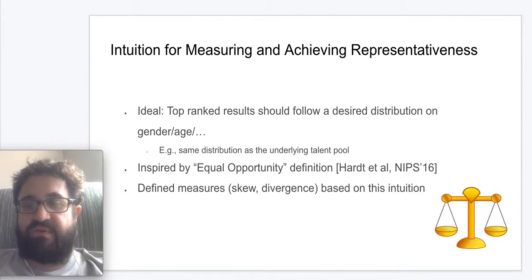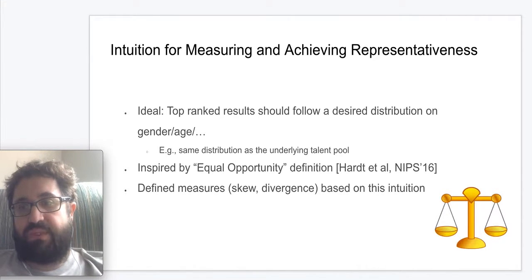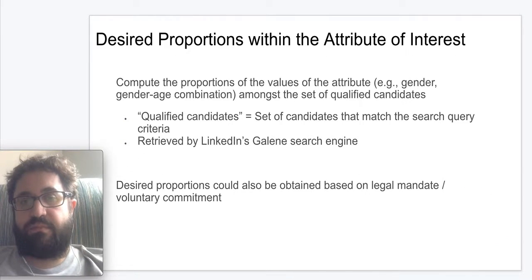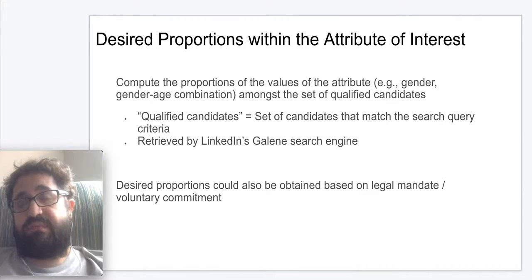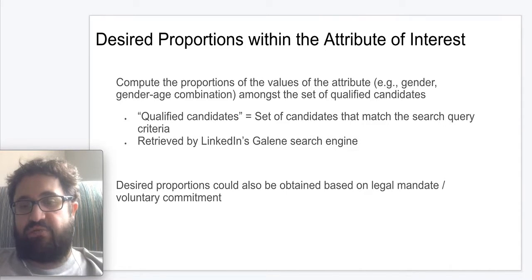We define the qualified population to be the set of candidates that match the criteria set forth in the recruiter's query. For example, if the query is for people who can code in Java and are in the San Francisco Bay Area, then the qualified population is all members in that area who can code in Java. We utilize LinkedIn's internal search engine to obtain this set of qualified candidates, then compute the empirical distribution over genders to understand the required gender representation constraints. This distribution is used for computing our representation metrics and applying re-ranking.